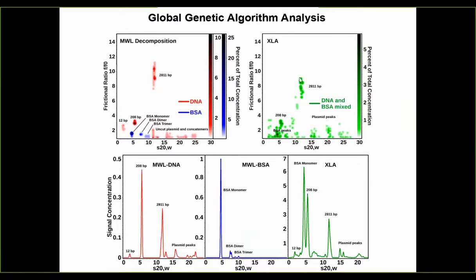If you do the same experiment with single-wavelength mode in the old Proteome Lab XLA, you get much less resolution and a lot more noise — it's really hard to tell which one is which. Here's your differential S-value distribution where all the peaks are basically running together, while in the multi-wavelength result they are completely baseline separated from each other — one is red (DNA), one is blue (BSA). You can immediately appreciate the wealth of information gained by doing a multi-wavelength experiment versus the old single-wavelength method where everything is bunched together.